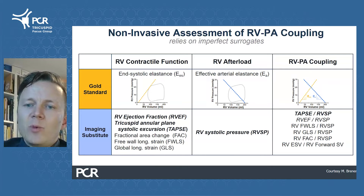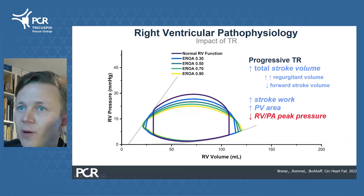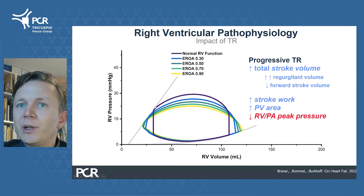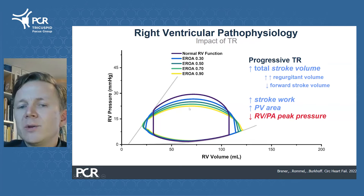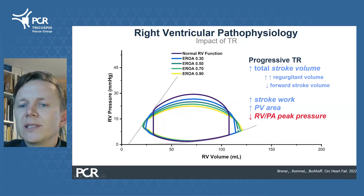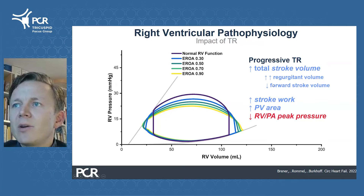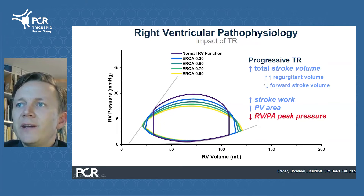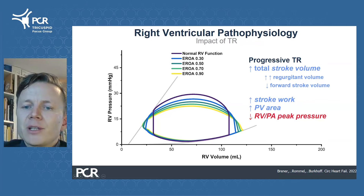Now let's see what happens when we introduce tricuspid regurgitation into this model. From the purple loop with no tricuspid regurgitation to the yellow loop with torrential TR, the stroke volume progressively increases. Keep in mind this results from an increase in regurgitant volume, while the RV forward stroke volume actually decreases. In addition, stroke work increases, but importantly RV and PA pressures tend to decline.